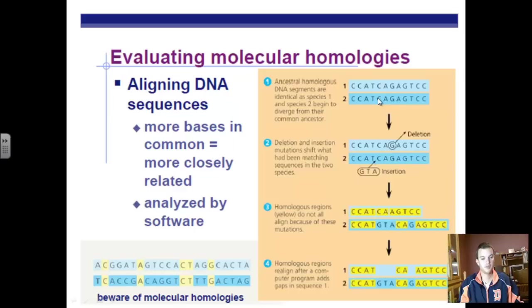What we're looking for is similarities in DNA. We have two organisms from a common ancestor, and during evolution, one population had a deletion occur that altered the DNA sequence — shifting all the nucleotides over.